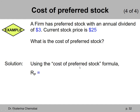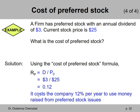Solution: using the cost of preferred stock formula, R_P equals dividend D divided by price per share today, capital P subscript 0. Plugging in the numbers, the dividend is $3 and we divide it by the price per share of preferred stock today of $25, which gives us 0.12 in decimals, or a 12% cost of preferred stock. This can be interpreted as it costing the company 12% per year to use money raised from preferred stock issues.